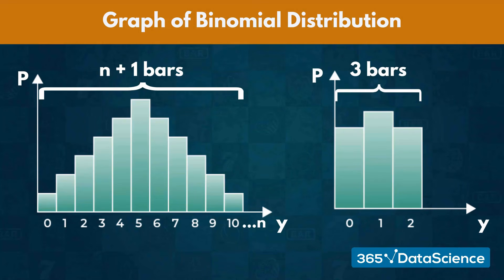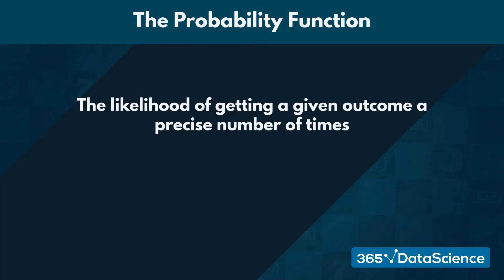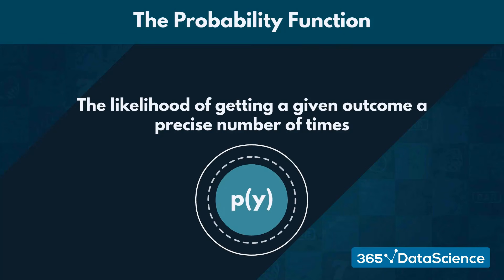If we wish to find the associated likelihood of getting a given outcome a precise number of times over the course of N trials, we need to introduce the probability function of the binomial distribution.